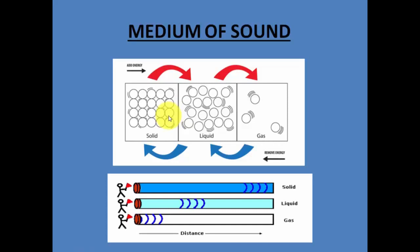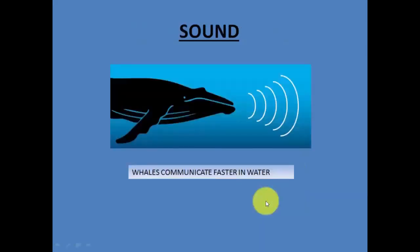In gases, the molecules are even farther from each other, so it takes even more time for sound to travel through them. That is exactly why sound travels fastest in solids, slower in liquids, and slowest in gases. In fact, sound can travel four times faster in solids than in air. That is also why whales communicate very fast in water — because in liquids sound travels faster, which is exactly why whales generally communicate faster underwater.